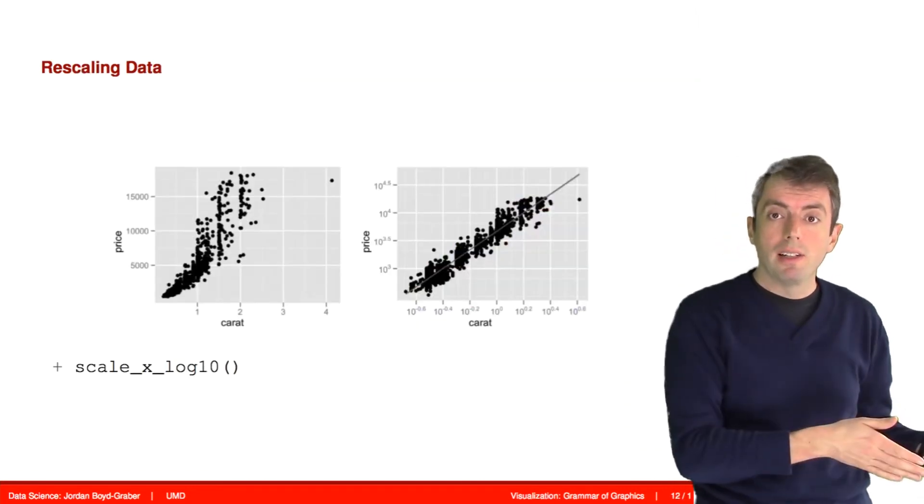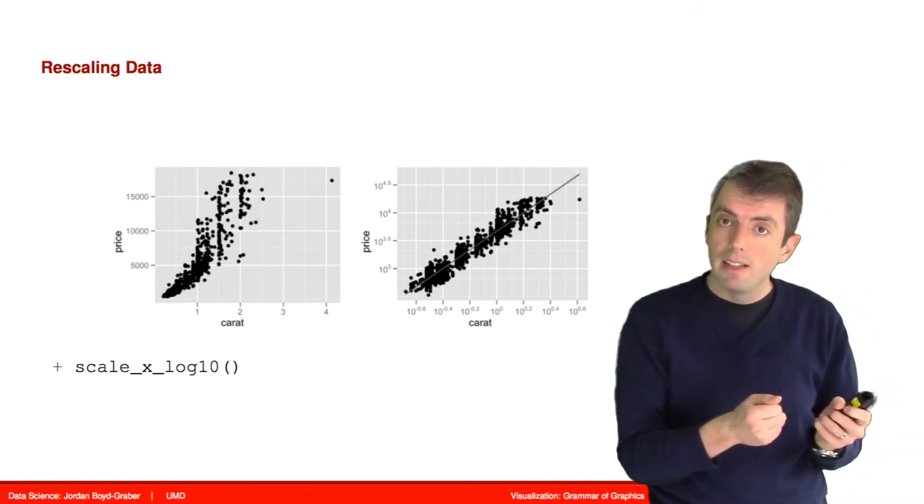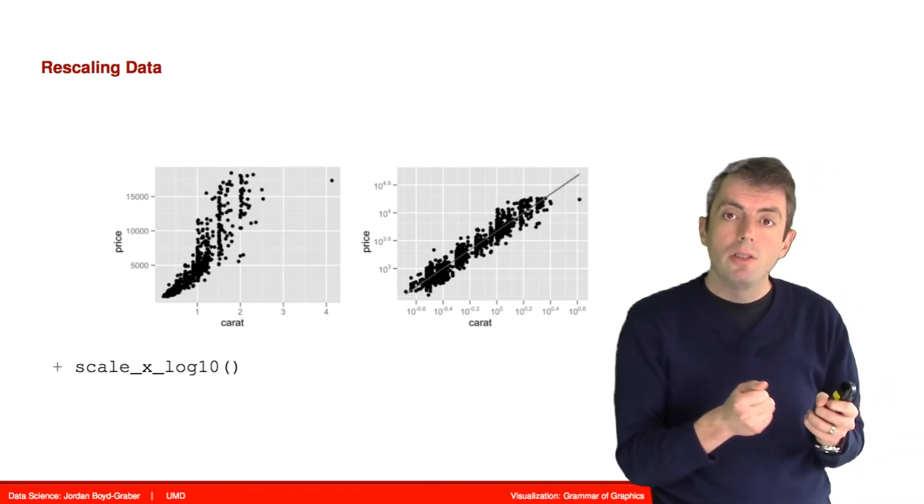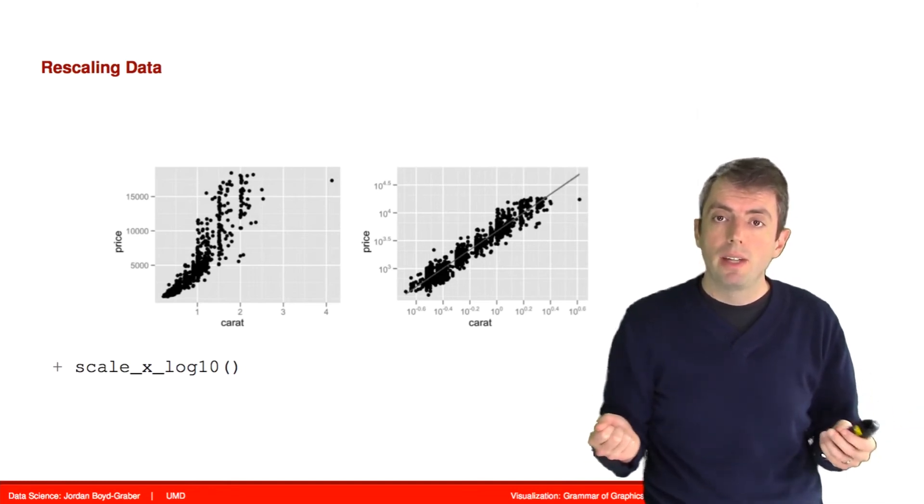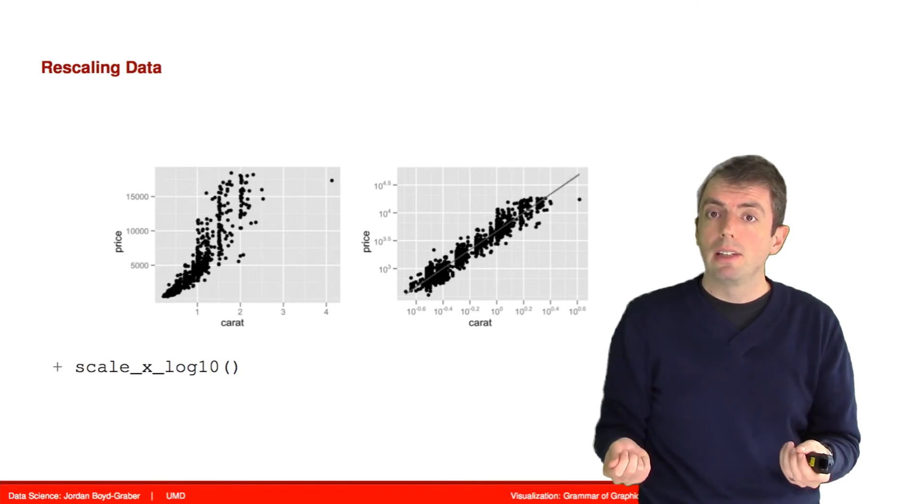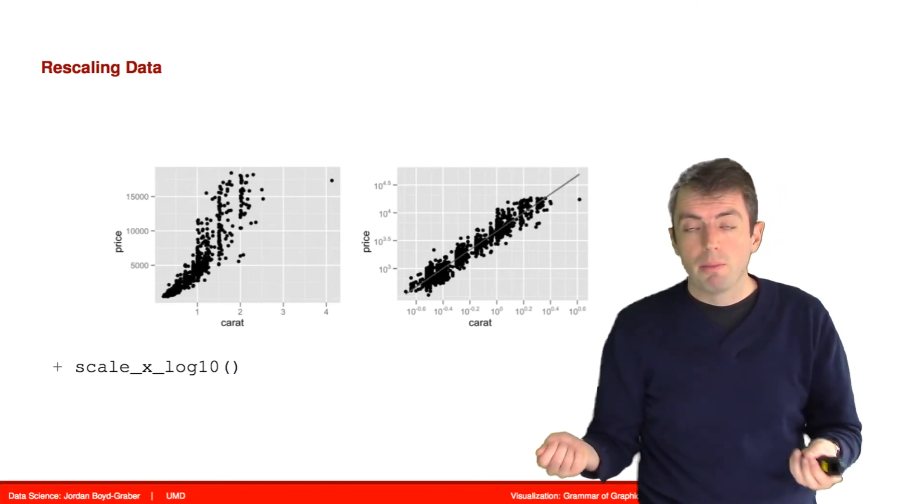You may have a plot that looks like what's going on on the left here. All your data is bunched up. You may want to transform one or both of your axes to use a different scale. Instead of a linear scale, you may want to use a logarithmic scale.